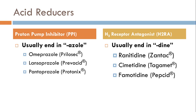The H2RAs end in '-dine.' Examples are ranitidine, cimetidine, and famotidine, with brand names Zantac, Tagamet, and Pepcid. There are other H2RAs out there, but focus on these. Check out the supplementary material for a more exhaustive list of these medications that might appear in the top 200.